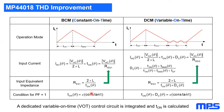For the THD improvement: in BCM operation, the ratio of input voltage over input current — the equivalent resistance — is proportional to the inductor value and the on time. To ensure a constant equivalent resistance and sinusoidal current in phase with the sinusoidal voltage, you just need to keep the on time constant. This is a very easy architecture to implement.